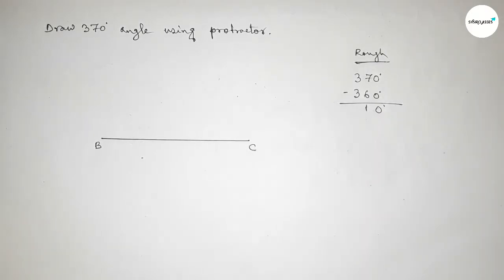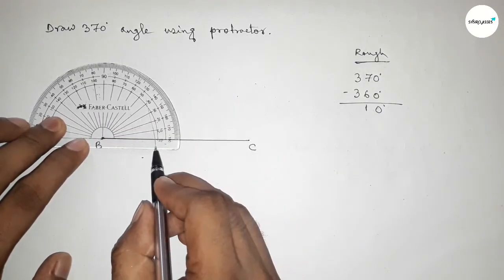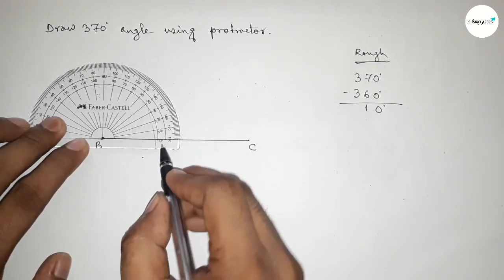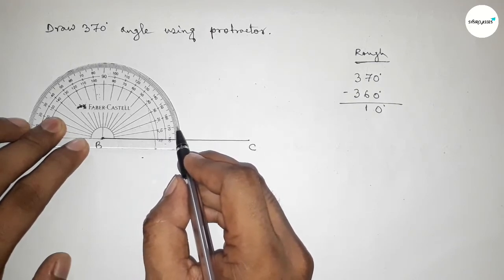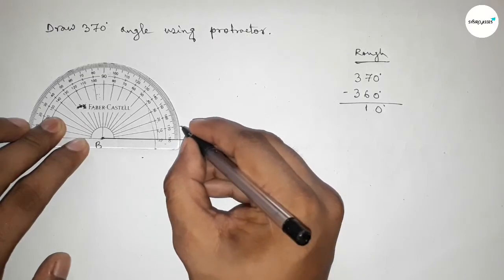So first we have to draw a 10 degree angle on point B by using the protractor. This is 0 starting, and this is 10 degrees. So this line represents 10 degrees.